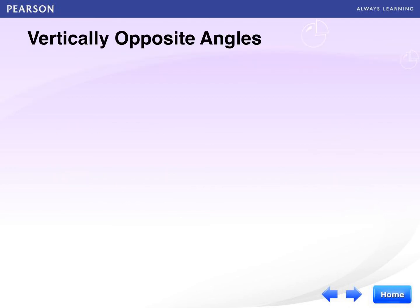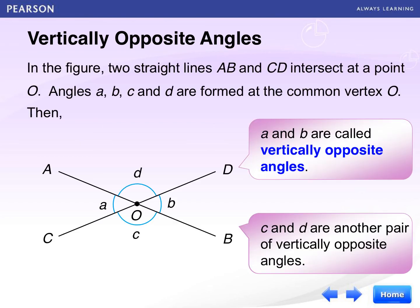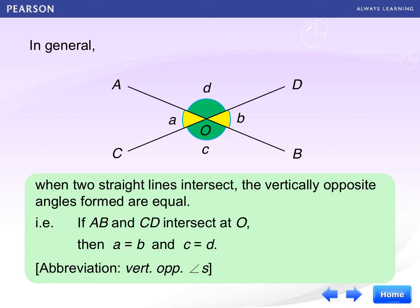The last property to be discussed in this video is vertically opposite angles. In this figure, AB and CD are two straight lines that intersect at point O. Angles A, B, C, D are formed at the common vertex O. A and C are vertically opposite angles, and B and D are another pair of vertically opposite angles. In general, if AB and CD intersect at point O, then angle A equals angle C, and angle B equals angle D. The short form is 'vertically opposite angles.'